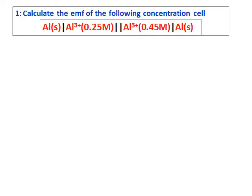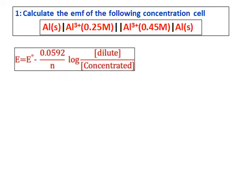Calculate the EMF of the following concentration cell. The cell given is aluminum solid | aluminum ion with a concentration of 0.25 molar on the anode side, and aluminum ion | aluminum solid with a concentration of 0.45 molar on the cathode side. According to the equation, the dilute concentration comes on top and the concentrated concentration comes at the bottom. The electrons always move from the dilute concentration to the concentrated concentration — the dilute side acts as the anode and the concentrated side acts as the cathode.